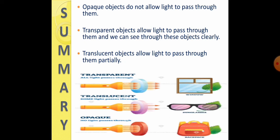First is, opaque objects do not allow light to pass through them. Second is, transparent objects allow light to pass through them. And we can see through these objects clearly. Third is, translucent objects allow light to pass through them, but partially. As it is mentioned in the given picture, these are the examples of transparent, translucent and opaque objects.